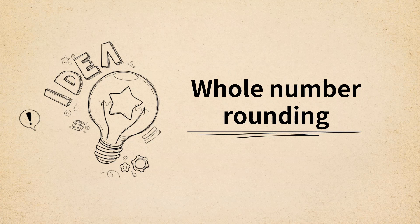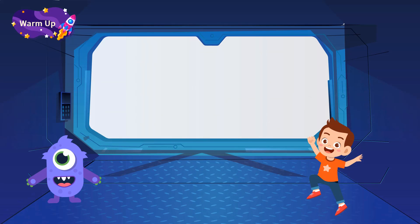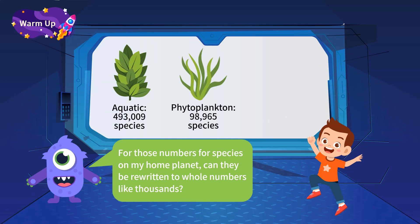In the last video, Lumos had understood the pattern to rewrite the whole 10,000 numbers on Earth. But he still was not satisfied. For those numbers for species on my home planet, can they be rewritten to whole numbers like thousands?